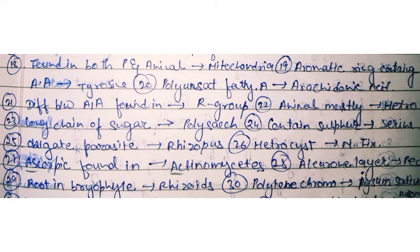The aromatic ring-containing amino acid is tyrosine. The polyunsaturated fatty acid is arachidonic acid — it is a polyunsaturated fatty acid. The differentiation between amino acids is found in the R group, which is the functional group that differs between amino acids.